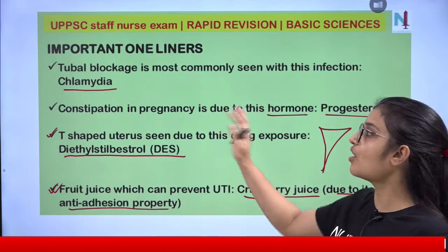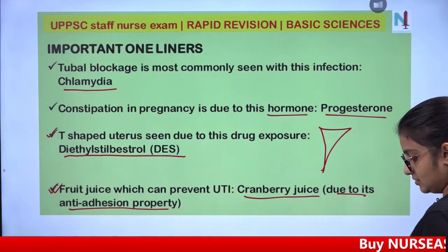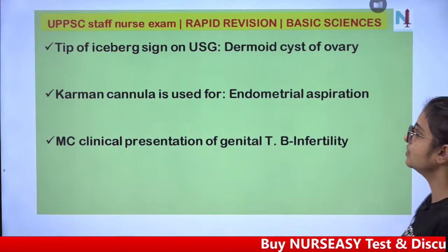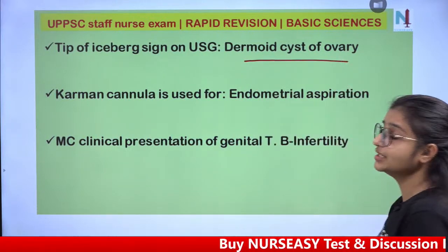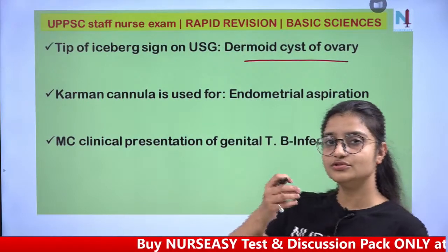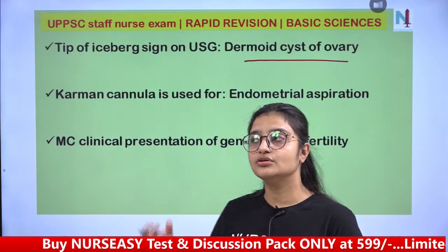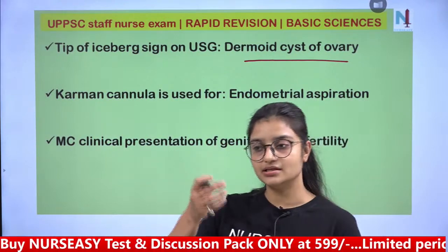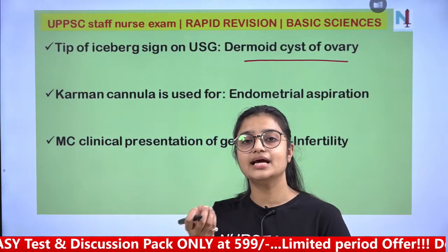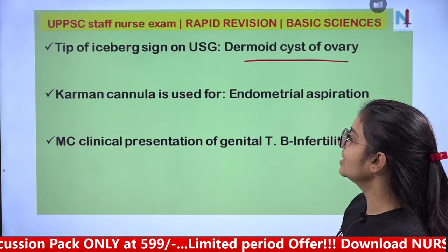The most common tubal blockage infection is Chlamydia. Tip of iceberg sign on ultrasonography is seen in dermoid cyst of the ovary. In USG, only the tip is visible because the cyst is filled with sebum, hair, or fluid, and most of the cyst is invisible — hence it is called the tip of iceberg sign.